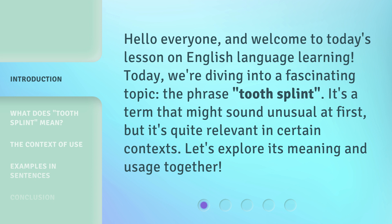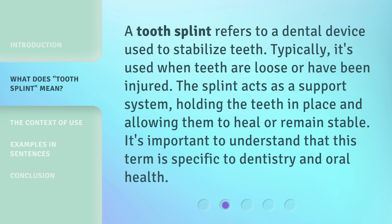It's a term that might sound unusual at first, but it's quite relevant in certain contexts. Let's explore its meaning and usage together. A tooth splint refers to a dental device used to stabilize teeth. Typically, it's used when teeth are loose or have been injured. The splint acts as a support system, holding the teeth in place and allowing them to heal or remain stable. It's important to understand that this term is specific to dentistry and oral health.